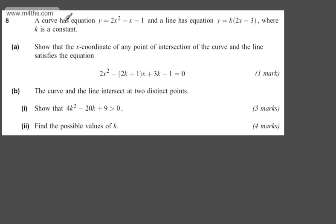In question 8, we're told a curve has equation y equals 2x squared minus x minus 1, and a line has equation y equals k multiplied by 2x minus 3, where k is a constant.